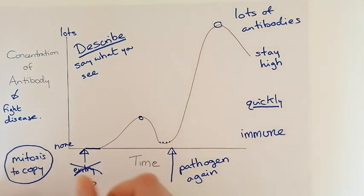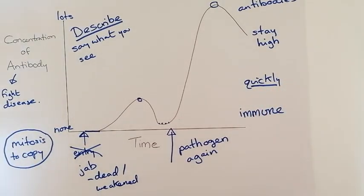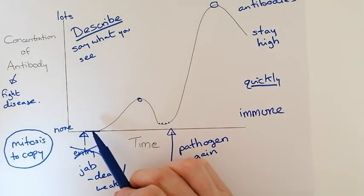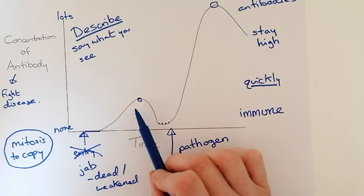So you would now have dead or weakened versions, attenuated perhaps, dead or weakened versions of the bacteria or the virus entering your body. Your white blood cells go through mitosis, clonal expansion, they make extra copies of themselves, they practice fighting it.